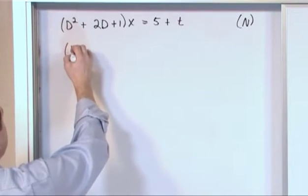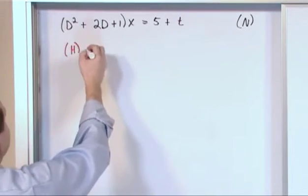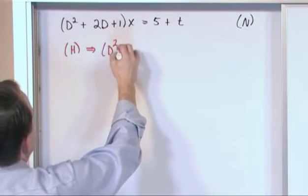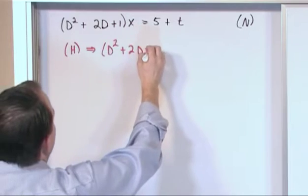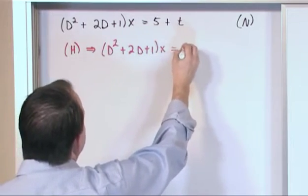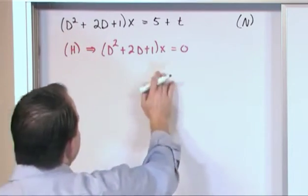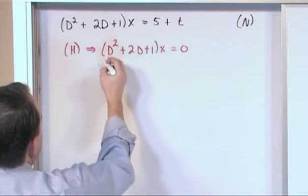What we're going to define is the related homogeneous differential equation, which will be in this case d squared plus two d plus one operating on x is equal to zero, is equal to zero. Okay? So, how do we do that? Well this is just a differential equation, constant coefficients homogeneous, so we know how to do that.